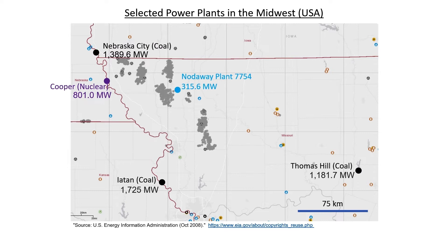I want to focus on the larger power plants. We have three major coal generating plants, each of them over one gigawatt of nameplate capacity. There's one nuclear power plant here on the map, the Cooper nuclear plant with an 801 megawatt nameplate capacity. I also want to draw your attention to the Not-A-Way plant. This is a gas-fired plant. There are a lot of other gas-fired plants here on the map too, but this particular one will be important later when we see how a small town gets its power.